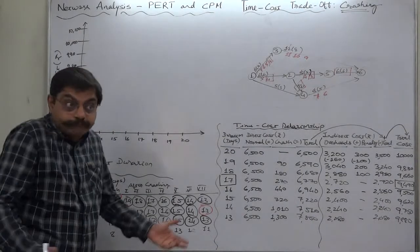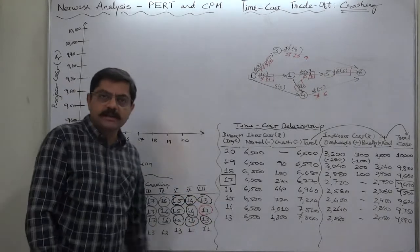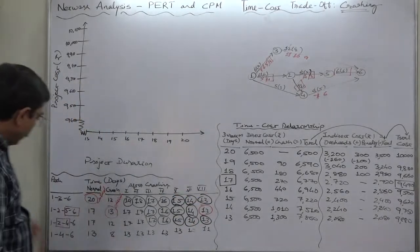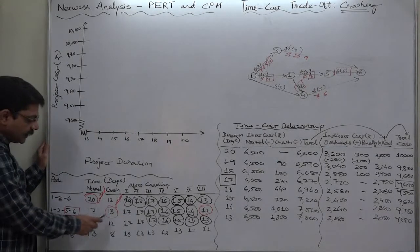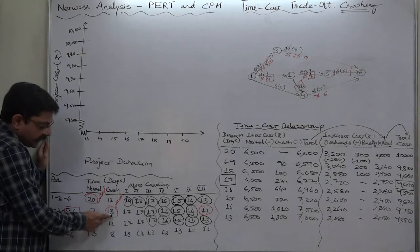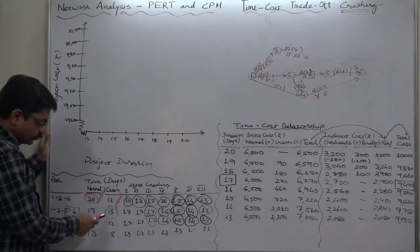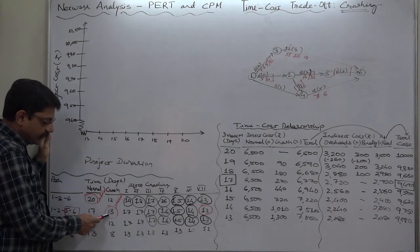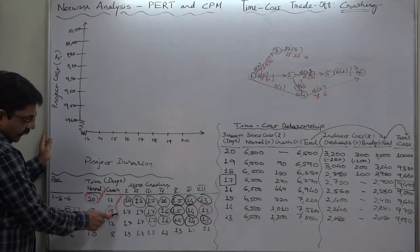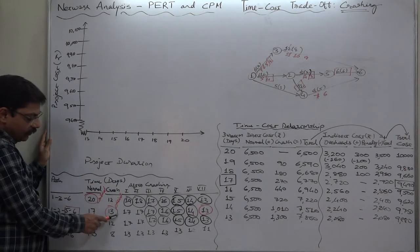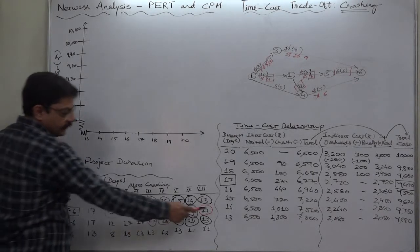Because in case of this path 1,2, 2,5 and 5,6 the further crashing after 13 days is not possible, which actually we had already examined in the beginning. After crashing this can have the minimum period of 13 days that we have reached.